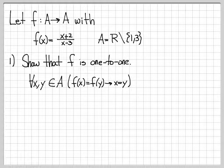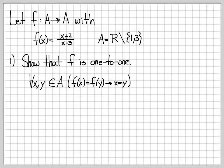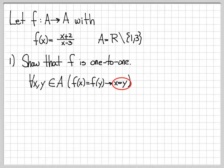Basically, it says that the only way to get to a certain value in the range of the function is via one value in the domain. There's not multiple ways to get to a point in the range — there's only one way. So if we happen to have two values f(x) and f(y) equal to each other, that must mean we're evaluating it at the exact same place.